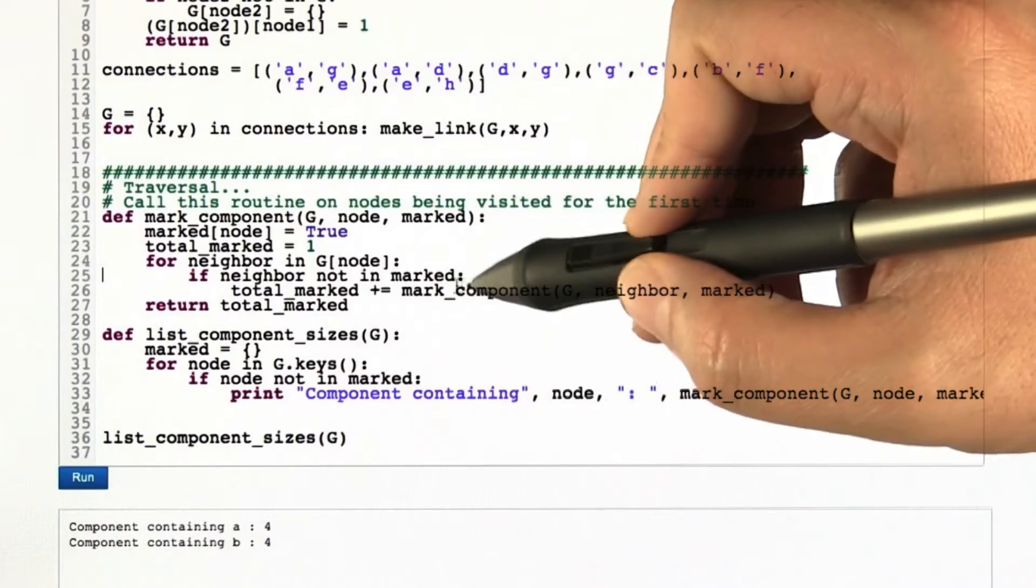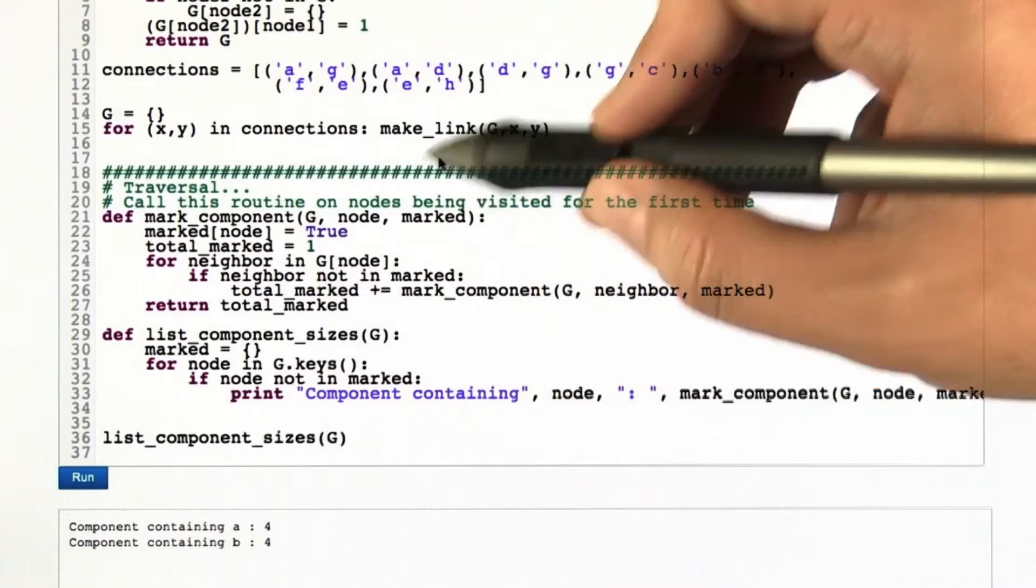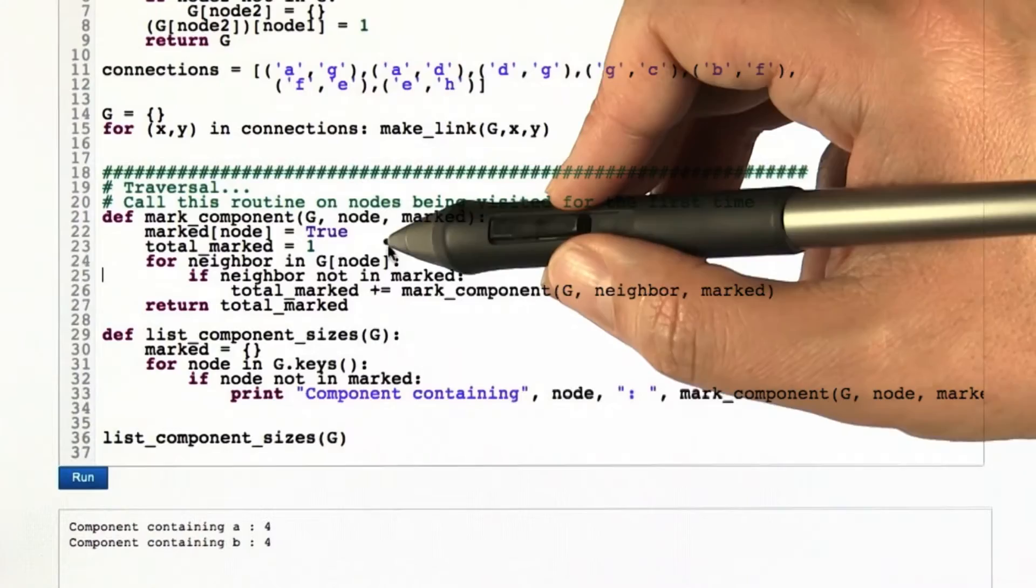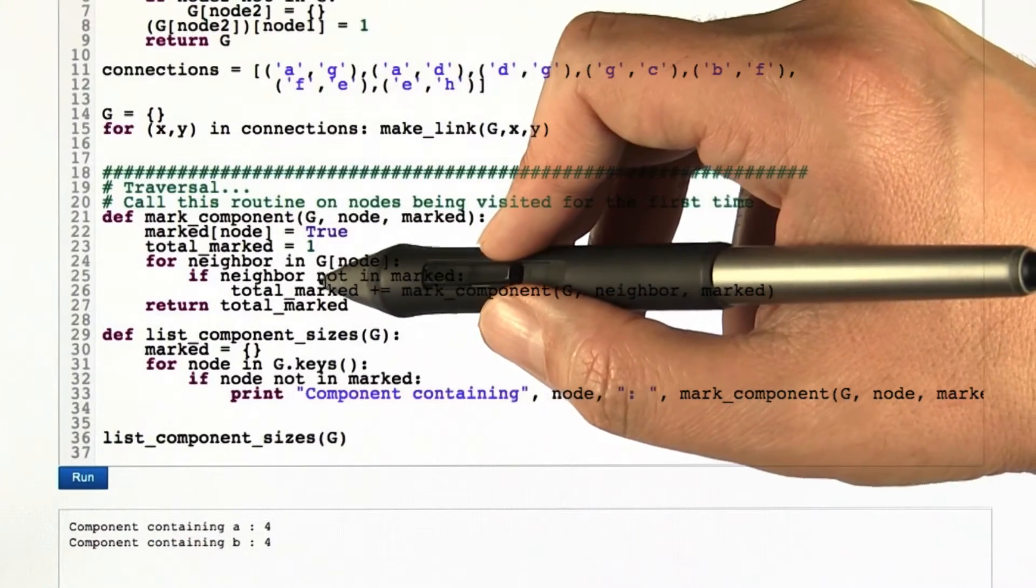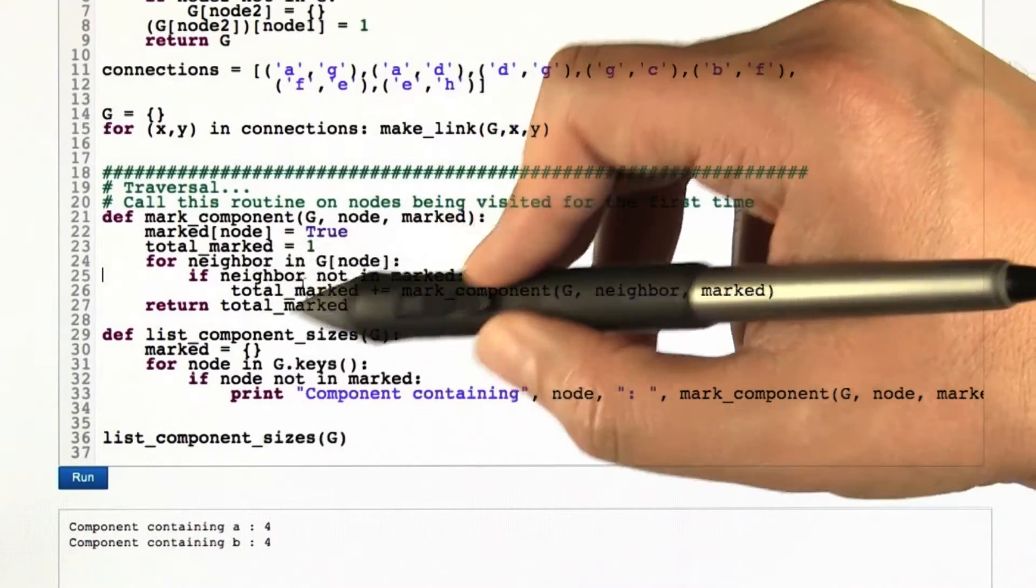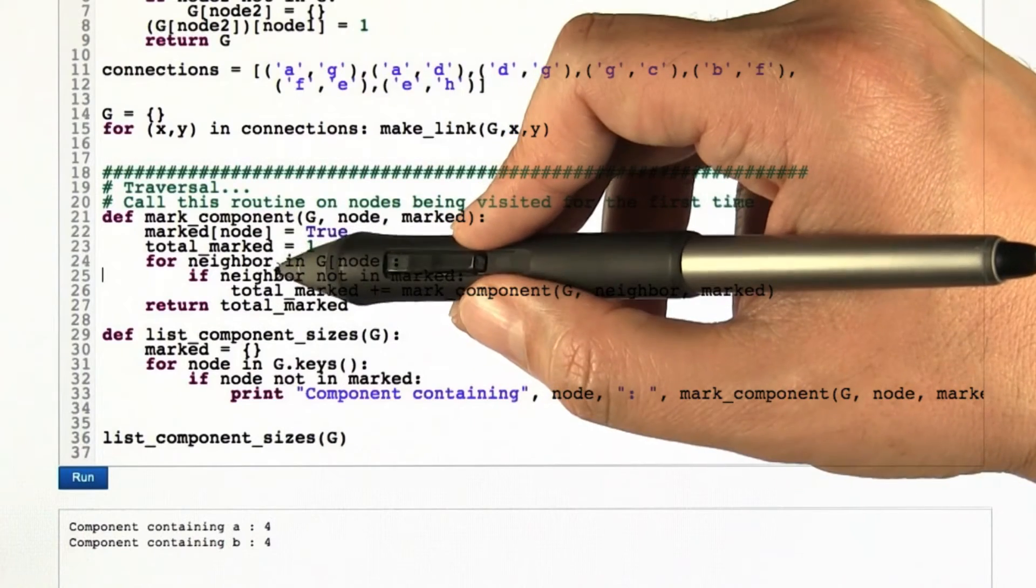And what it returns is the number of nodes that it marked as part of this process. However many nodes it marked, we're going to add that to the total marked. So we marked our current node, then we visited a neighbor and marked all the nodes connected to that neighbor. Then we come back and repeat this loop for all the different neighbors of the node where we started.